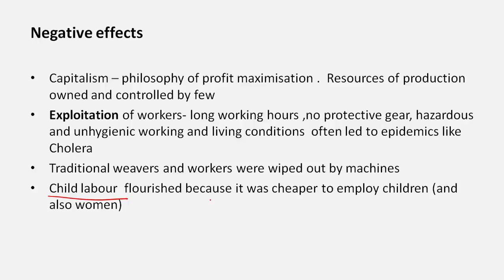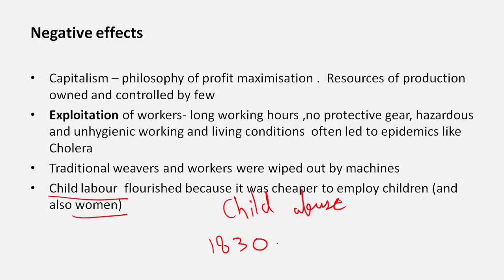Child labor was another major problem. Factory owners realized it was cheaper to employ children and women because they had to be paid less, and children could be abused and made to do any work through fear. A large proportion of the workforce in the Industrial Revolution comprised children — there is no other word for it than child abuse. Even the first factory acts around the 1830s only limited children's working hours to 12 or 14 hours, eventually leading to demands that child labor stop altogether — but an entire generation in England grew up this way.